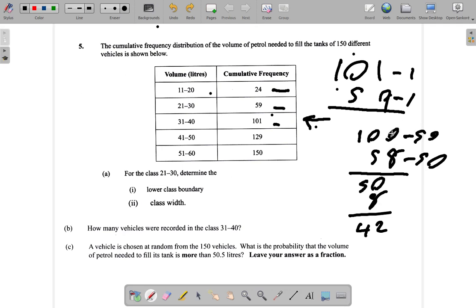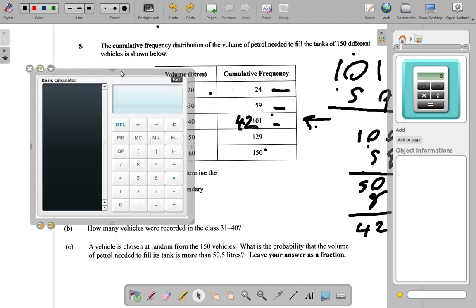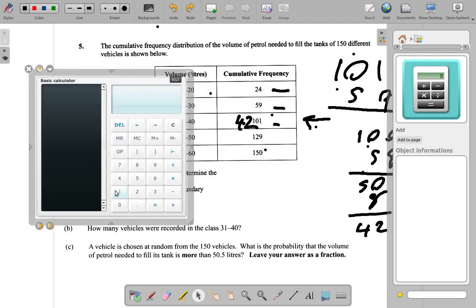Here it would have been 42. Using a calculator, of course I have a calculator here, you would have said 101 minus 59 and you get your 42.